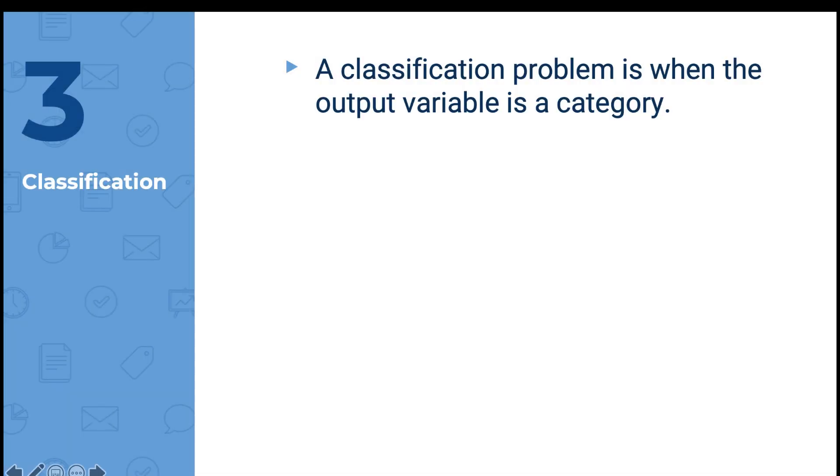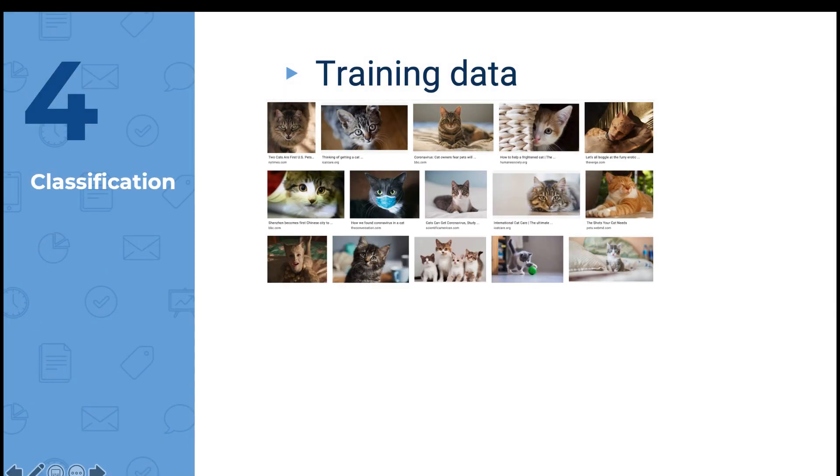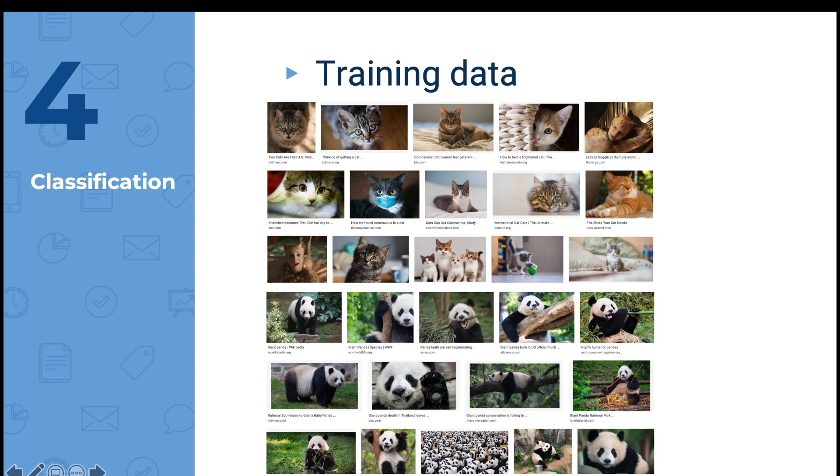A classification problem is when the output variable is a category. For example, if I feed the computer with a lot of pictures of cats and I label them as cat, then I feed the computer with pictures of pandas and I label them as panda, the computer knows what a cat and a panda look like. These are called training data.